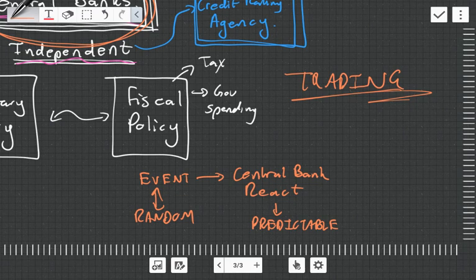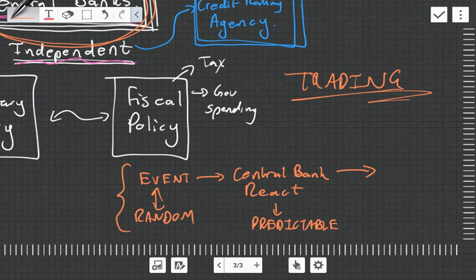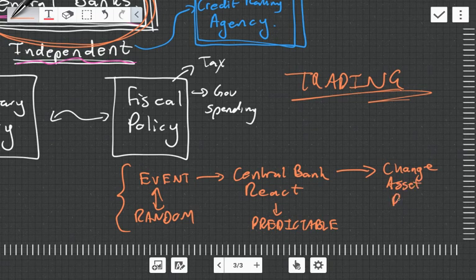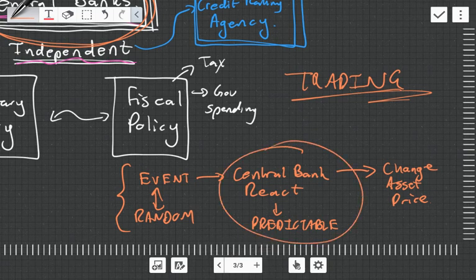So they're going to change interest rates in a certain way to combat whatever event it was. Because interest rates are changing, there's going to be a change in asset prices, which you could almost predict. So you can know, okay, this random event happens, central banks are going to increase interest rates to prevent that, which is actually going to cause these various assets to also go up and these various assets to go down. You short sell those assets, you buy the other assets, and once the central bank makes their decision, congratulations, you've actually made a lot of money.